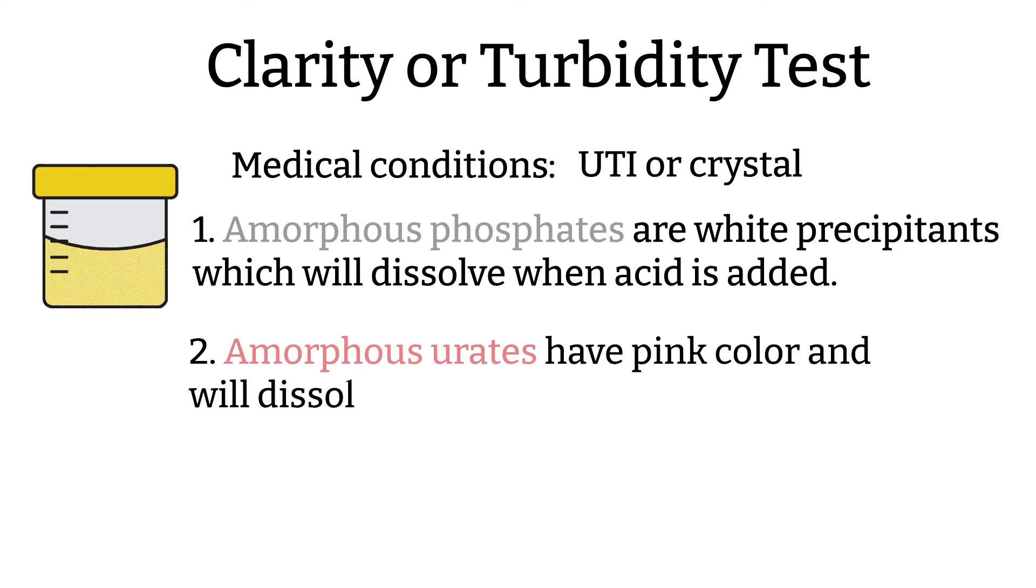Second, amorphous urea in an acid urine. Amorphous urea usually have pink color, which can be confused with red blood cells. Amorphous urea will dissolve if the specimen is heated.